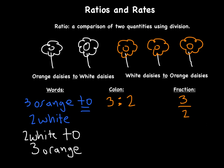If we were to do white daisies to orange daisies, I would just reverse that. In words: 'two white to three orange.' As a colon: 2 : 3. And then as a fraction, since we're going left to right, it would be two over three. So these are both part-to-part ratios.